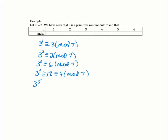3 to the fifth is going to be 3 times 3 to the fourth — that's the easiest way to do it. So it's 12, reducing to 5 mod 7. And 3 to the sixth: we know this is 1 since 3 is a primitive root mod 7. It's also 3 times 3 to the fifth, so 3 times 5 is 15, which has a remainder of 1 when you divide by 7.